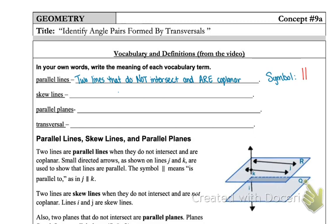Skew lines might be one that you haven't heard of before. And that is two lines that do not intersect and are not coplanar. So a good example of that would be like if you think of the highway. You've got a bridge going over the highway and a road going under the bridge. There can be cars that would basically be on top of each other if the two lines intersected. But since they're in different planes, the cars can go through at the same time.